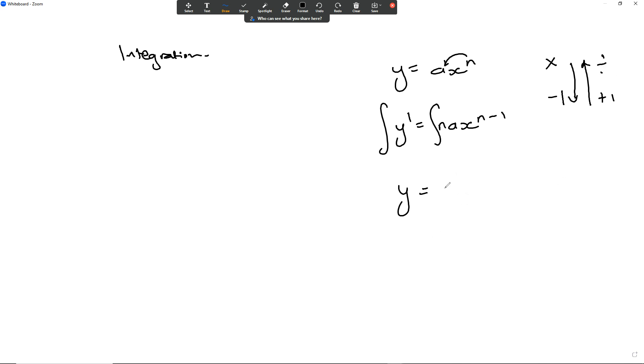In this case, we would take nax to the power of n minus 1. What we would do is take that plus 1 and then divide it by whatever that ends up as. You can see that's going to cancel.